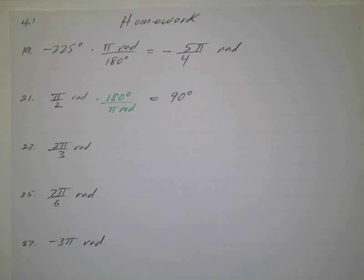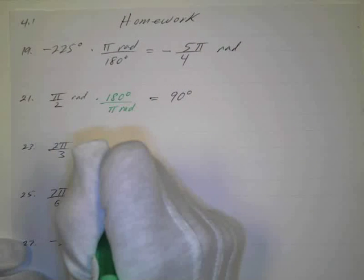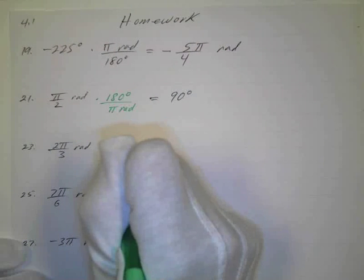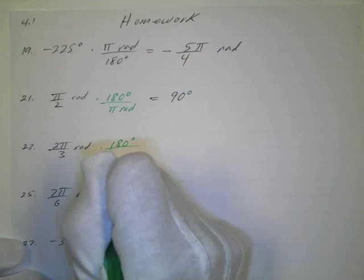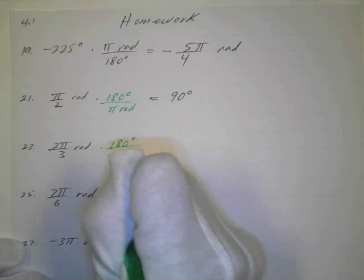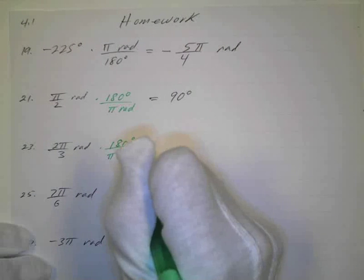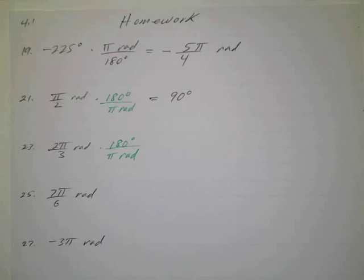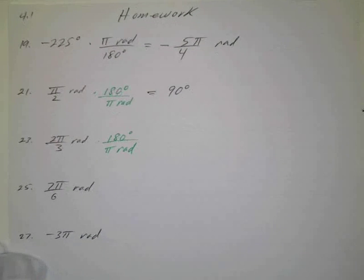Okay, the same thing over here on number 23, we'll again multiply by the conversion. We know that there's 180 degrees per π radians. So always write these down. I know sometimes you guys just want to write down the answers, but try to show all this because this is going to make it a little bit easier.